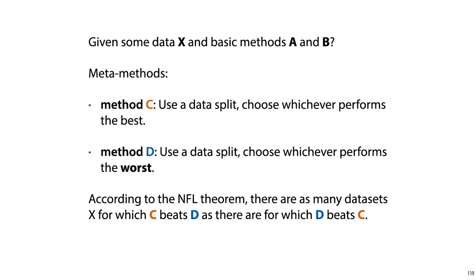In essence, method C is the method that we use and that we've described at the beginning of this lecture. Method D is a perverse method. It does the same thing — it uses a data split, checks which model performs the best — but it selects the model which performs the worst.